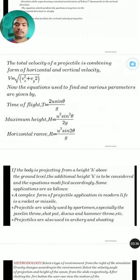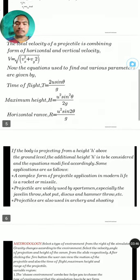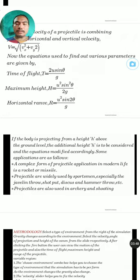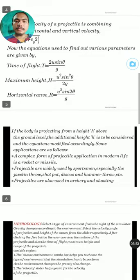Now the equations used to find out various parameters are given by: time of flight T = 2u sin θ / g, maximum height H = u² sin² θ / 2g, and horizontal range R = u² sin 2θ / g.